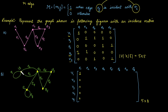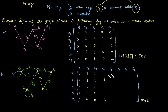E2 edge is incident with v1 and v2, so entries for v1 and v2 are 1 and the rest are 0 for the second column. For column 3, edge E3 is again between v1 and v2, so write 1 and 1 with the rest as 0. E4 is between v2 and v5. E5 is between v2 and v3. E6 is between v3 and v5. E7 is between v2 and v4. E8 starts and ends at v4, so only that entry equals 1 and the rest are 0.